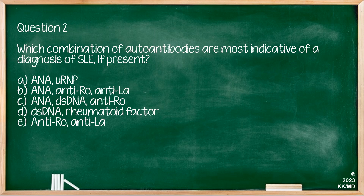Question two: which combination of autoantibodies is most indicative of a diagnosis of SLE? A: ANA, URNP. B: ANA, anti-Ro, anti-La. C: ANA, dsDNA, anti-Ro. D: dsDNA, rheumatoid factor. E: anti-Ro, anti-La. If you remember, we talked about the necessity of having a positive ANA with the updated guideline in order to diagnose anyone with lupus, and dsDNA and anti-Ro and La are quite specific for lupus. Therefore, option C would be the most appropriate answer.